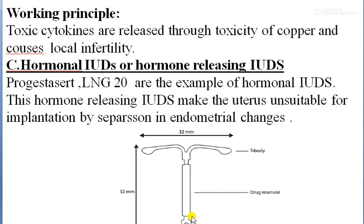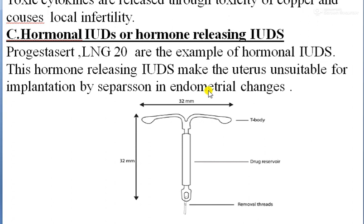By releasing these hormones, the IUD creates an unfavorable environment for implantation, preventing pregnancy. In this picture you can see the LNG-20 device, which has a T-shepherd structure with slightly curved horizontal arms and is not wrapped with copper wire.